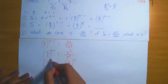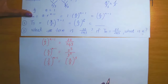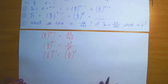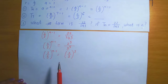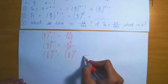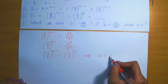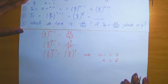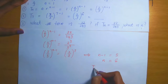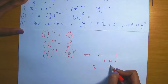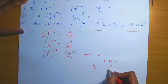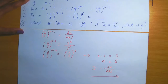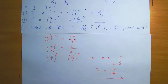So we have (2/3) raised to the power n minus 1 equals 2^5 divided by 3^5. Using properties of exponents, we can rewrite this as (2/3) raised to the power 5. So (2/3)^(n-1) equals (2/3)^5. Since the bases are the same, the exponents are equal, which implies n minus 1 equals 5, meaning n equals 6. This means term 6 in the sequence is the number 32/243.